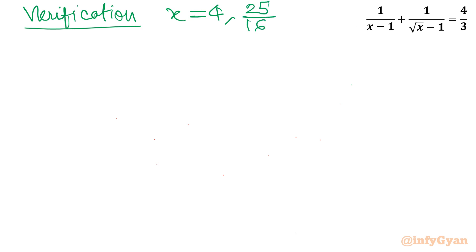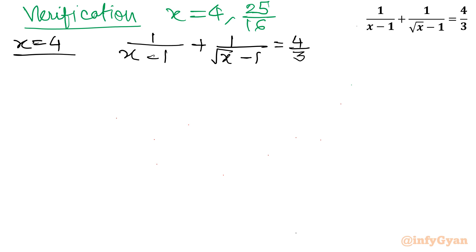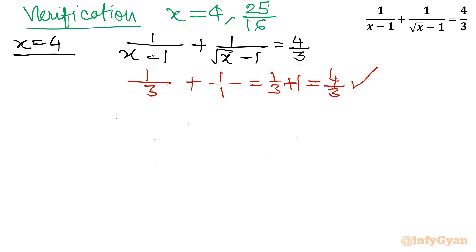First, let's verify x equals 4. Substituting: 1 over (4 minus 1) plus 1 over (root 4 minus 1) equals 1 over 3 plus 1 over 1, which equals 1 plus 1 over 3, giving 4 over 3. This matches the RHS, so x equals 4 is verified.